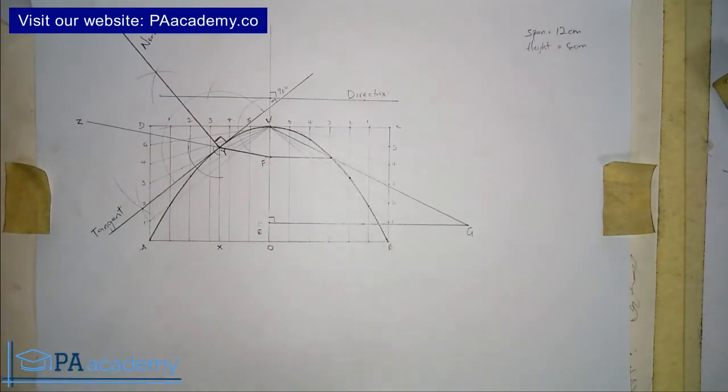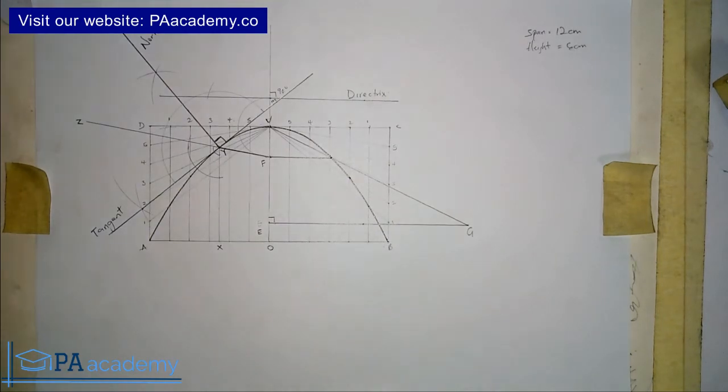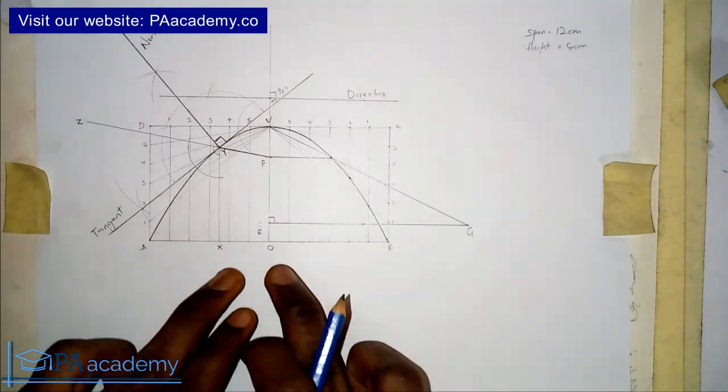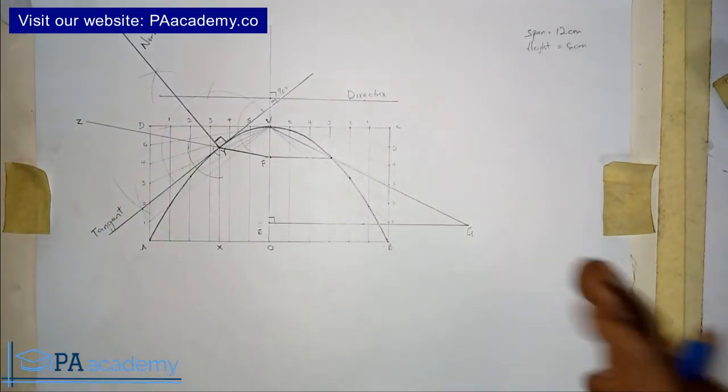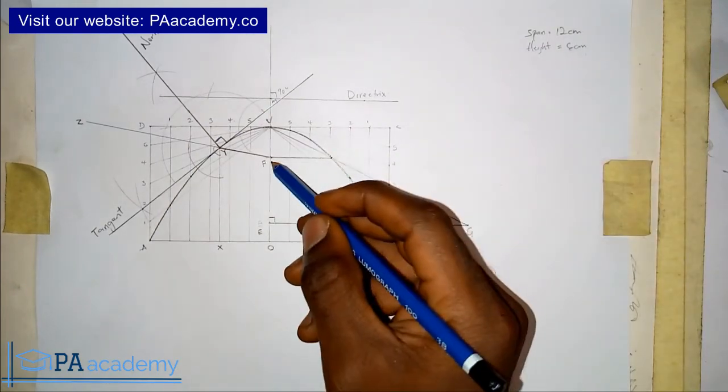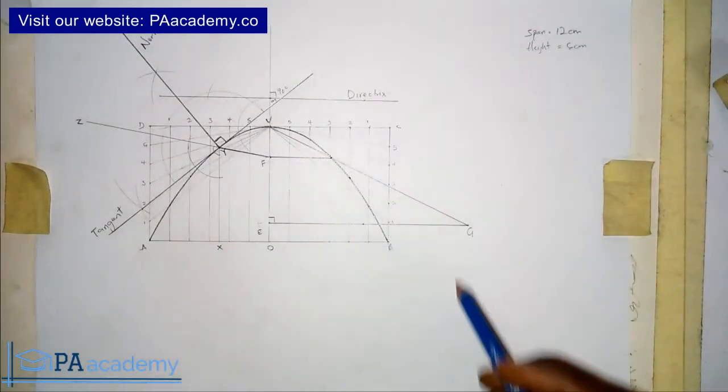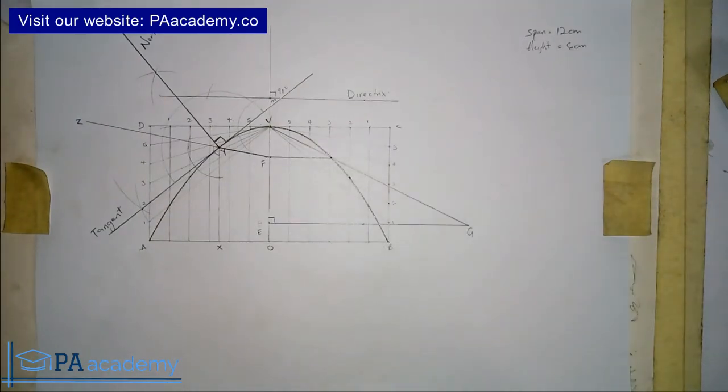So this is part three. And also there's going to be a part four for this video series under parabola. So in that part four, I'm going to be showing you how to draw a parabola when you are given the directrix and the focus. Remember when we are drawing this parabola, if you watch part one, what we are only given is the span and the height. But what if you are given your focus and your directrix? You are just given only those two values and you are asked to draw your parabola. How do you go about it? So that's what I'm going to be talking about in part four.